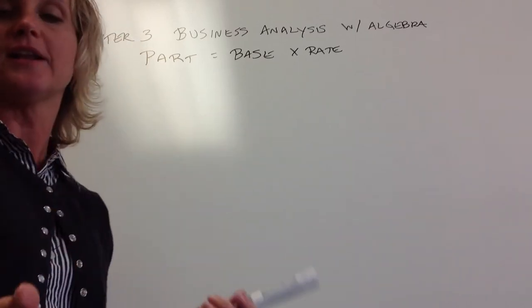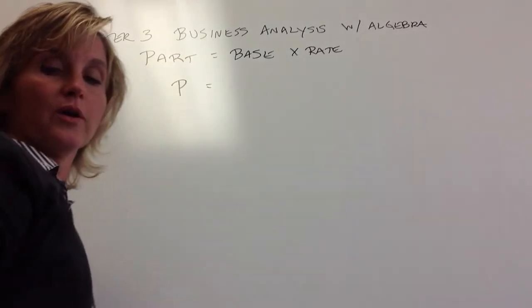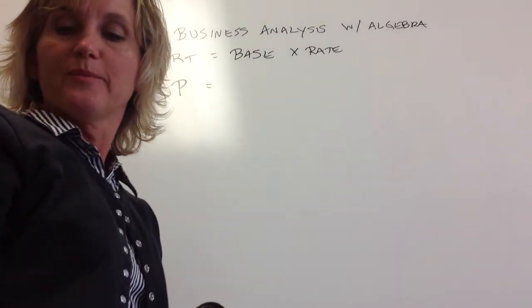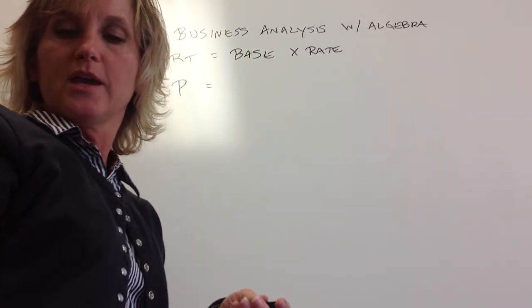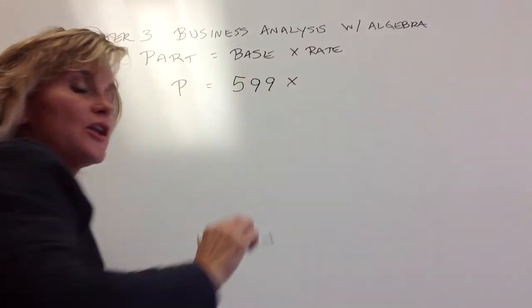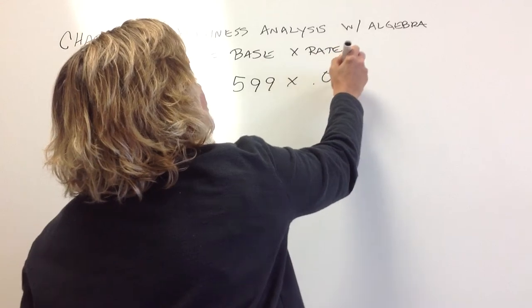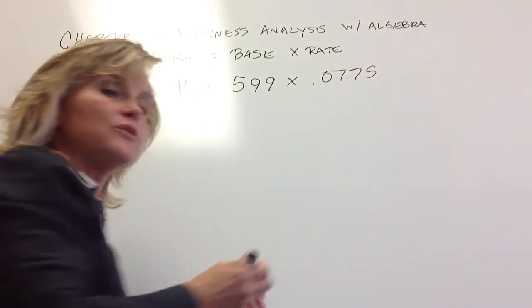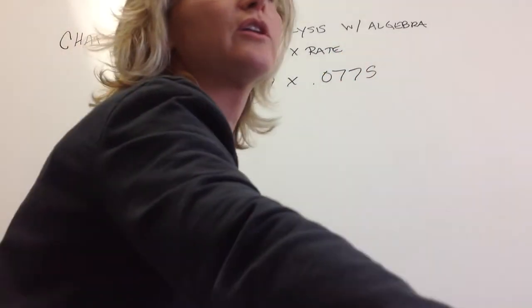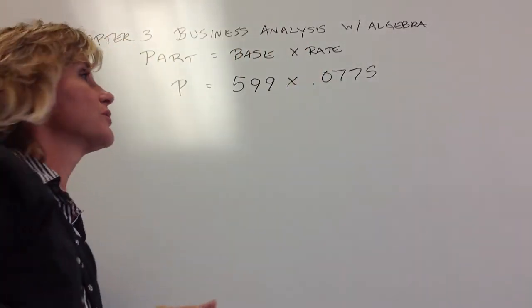So our part is what we're looking for, the price of the laptop, which in my example is $599. And then our sales tax rate is the 7.75%. And again, you can let your calculator convert that to a decimal for you. The financial calculator will do that if you push the percent button, or just convert it to the decimal on your own.